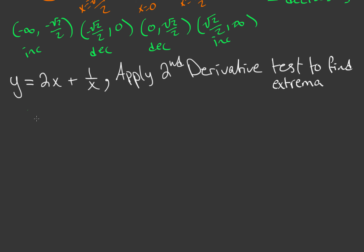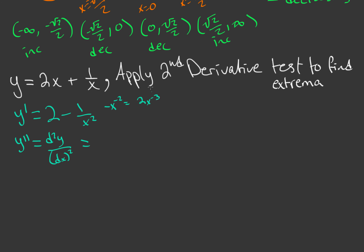Now let's use the second derivative test to confirm these extrema. Our first derivative is y' = 2 − x⁻², which we keep in that form to make differentiation easier. Taking the derivative, −x⁻² becomes 2x⁻³, so y'' = 2/x³.